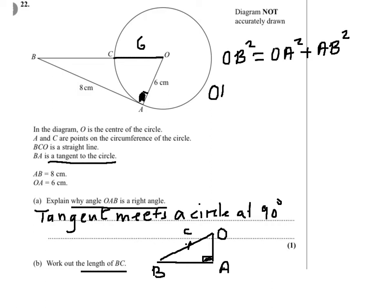This will give us OB squared equals OA squared, which is 6 squared plus 8 squared. That's 36 plus 64. OB is square root of 36 plus 64, which is square root of 100, so it's 10.